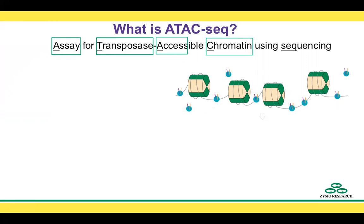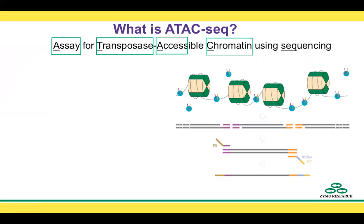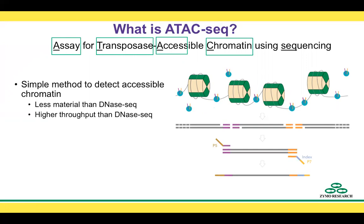The longer the open chromatin region, the more transposases will attach and cut the DNA. Because we know the sequence of those DNA strings that the transposase leaves behind, we can easily make ready-to-sequence libraries from the tagmented DNA. Therefore, ATACSeq is a simple method to detect open chromatin.